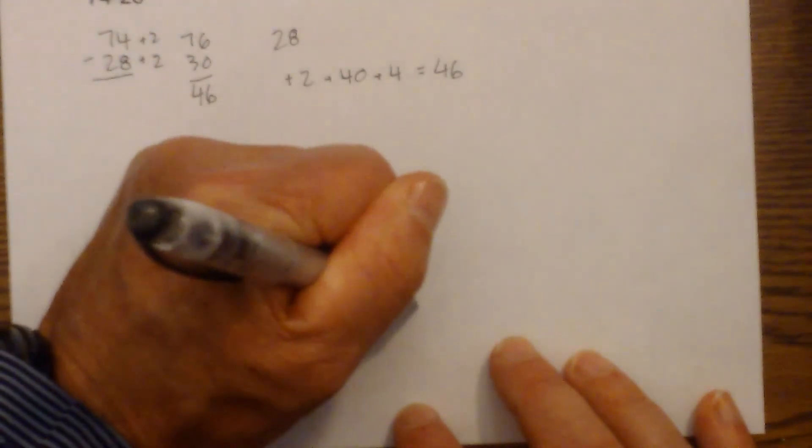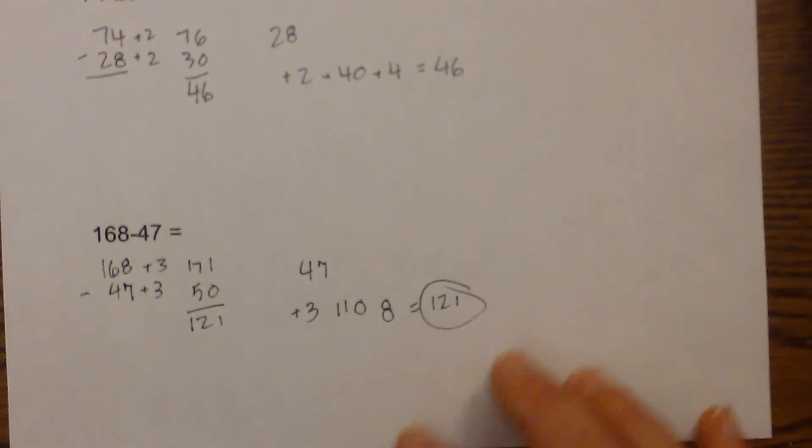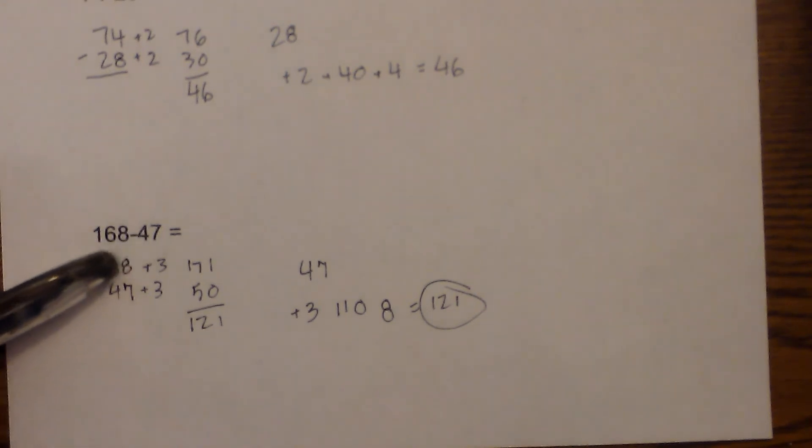So there are two techniques for doing some mental math in your head, subtraction. Adding so that it is a nice round number. Or like counting change back, what do I need to add to the number, the 47 to get to 168.